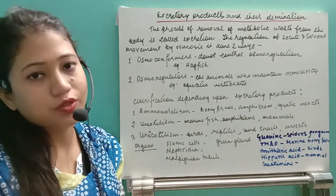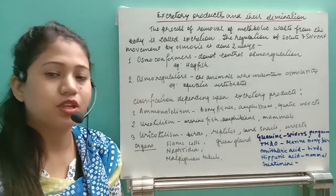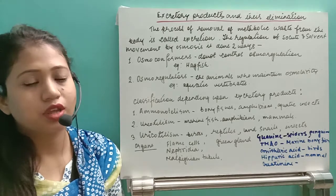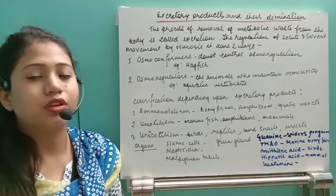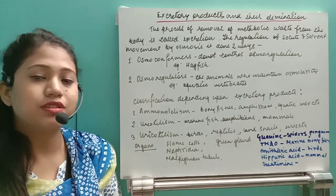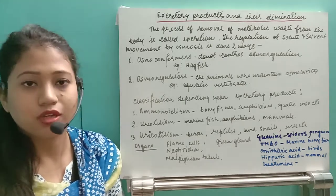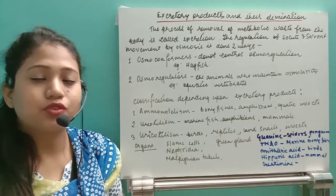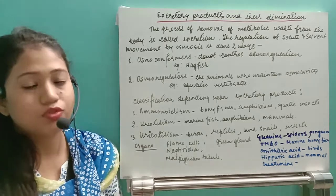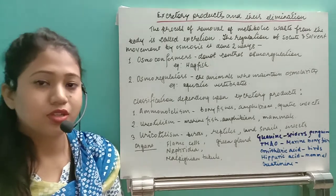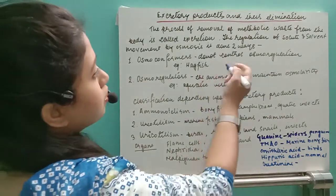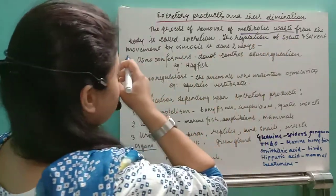Hello students, today we are going to start a new chapter: Excretory Products and their Elimination. First of all, we'll see the definition of excretion, then the different excretory products, and then the different organs found in different organisms. Excretion means the removal process of nitrogenous waste products produced in our body. The process of removal of metabolic waste from the body is called excretion.